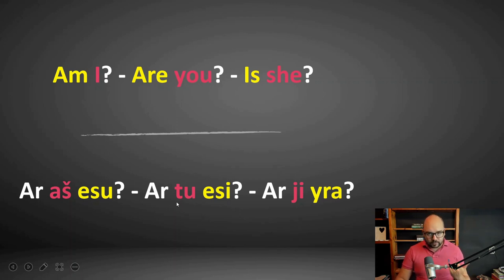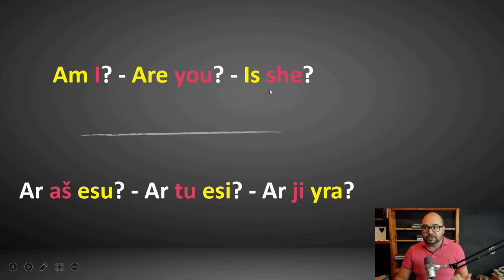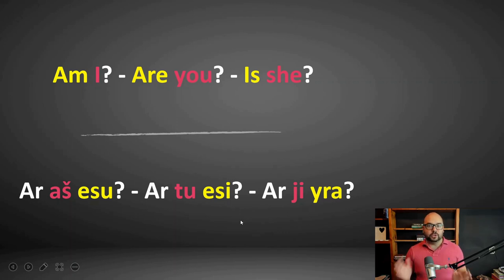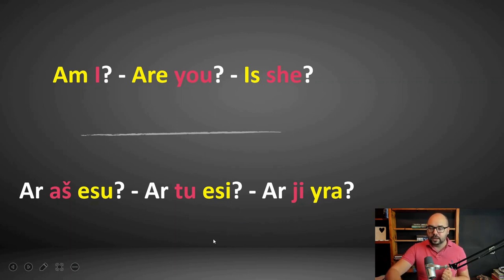'Ar tu esi?' — are you? 'Ar ji yra?' — is she? The only thing we do is add 'ar.' It's that simple — only add the 'ar.' Let's look at other verbs.